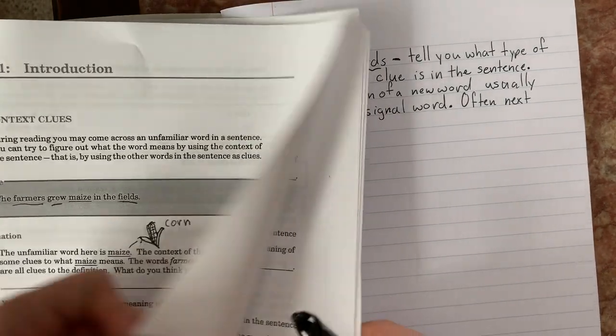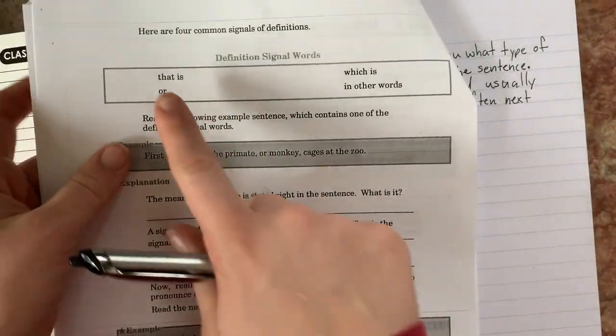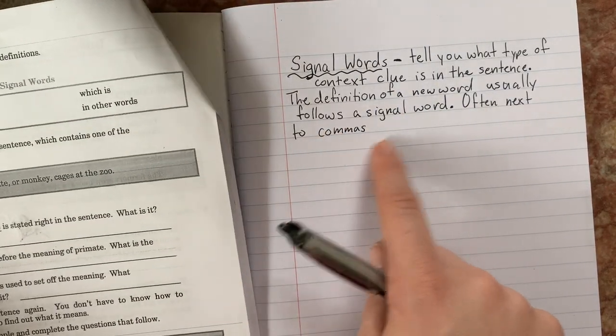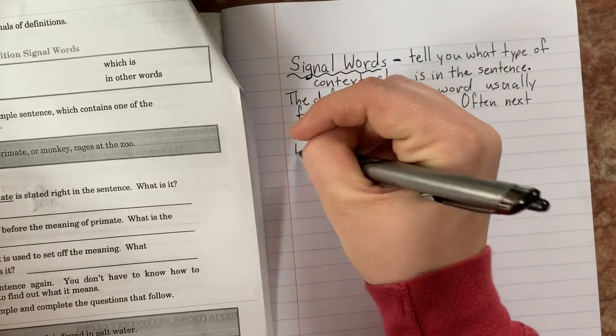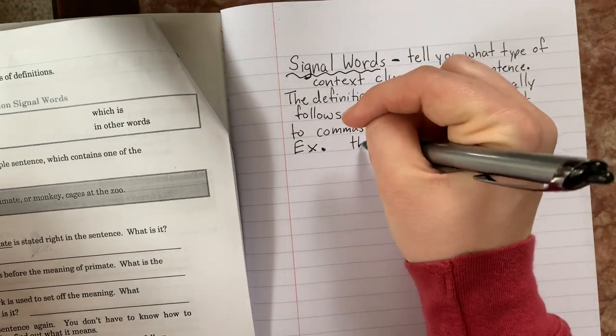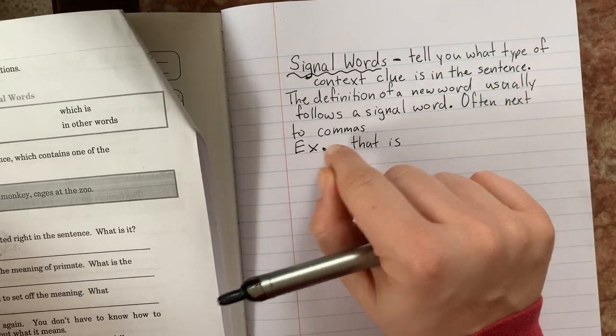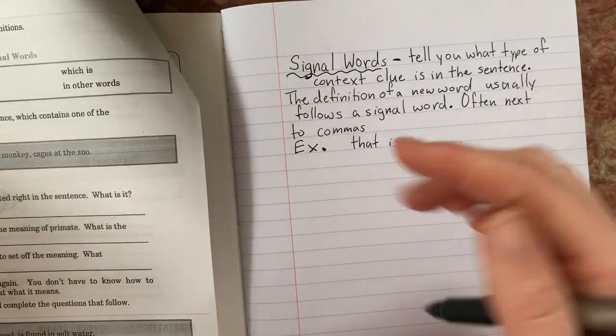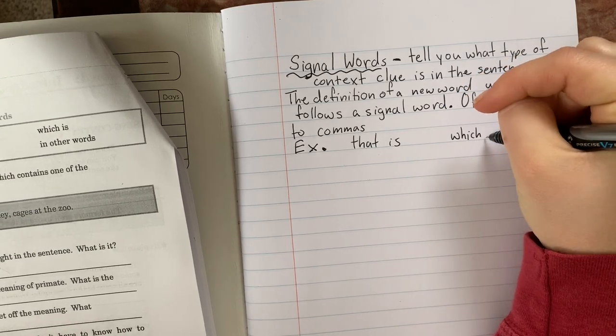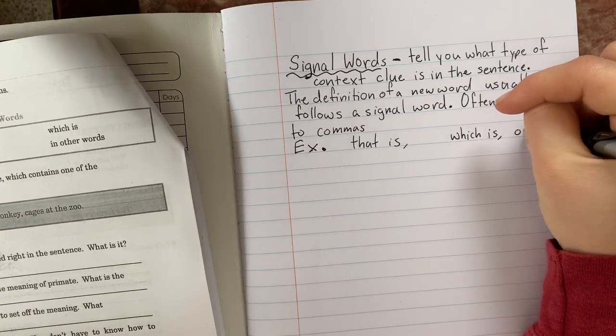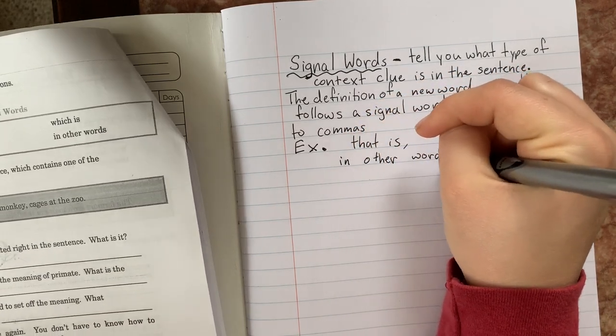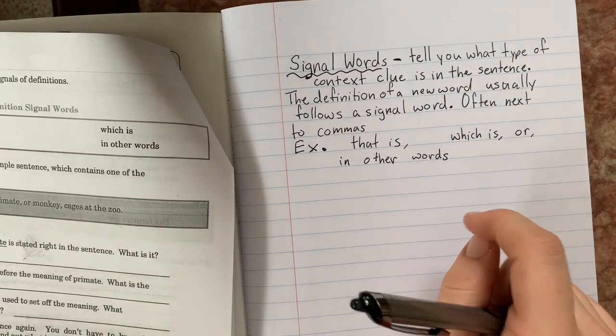Let's see. So let me flip over to our page that we're doing today. The top, it says, here are four common signals of definitions. So these words here, I'm going to want to make an example of them inside my notebook for future reference. So let me write E-X period for example. And the first one is that is. So the definition of a new word usually follows a signal word. So that is would be in front of the definition. It would help define something. The next one is which is. We've got or, and in other words. And I can guarantee that you've seen these signal words before in our sentences.